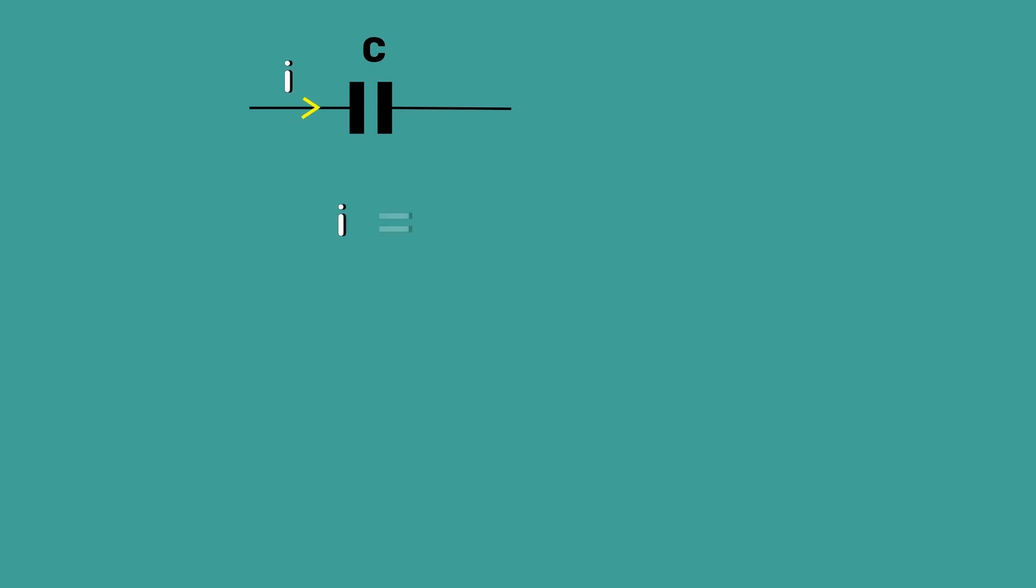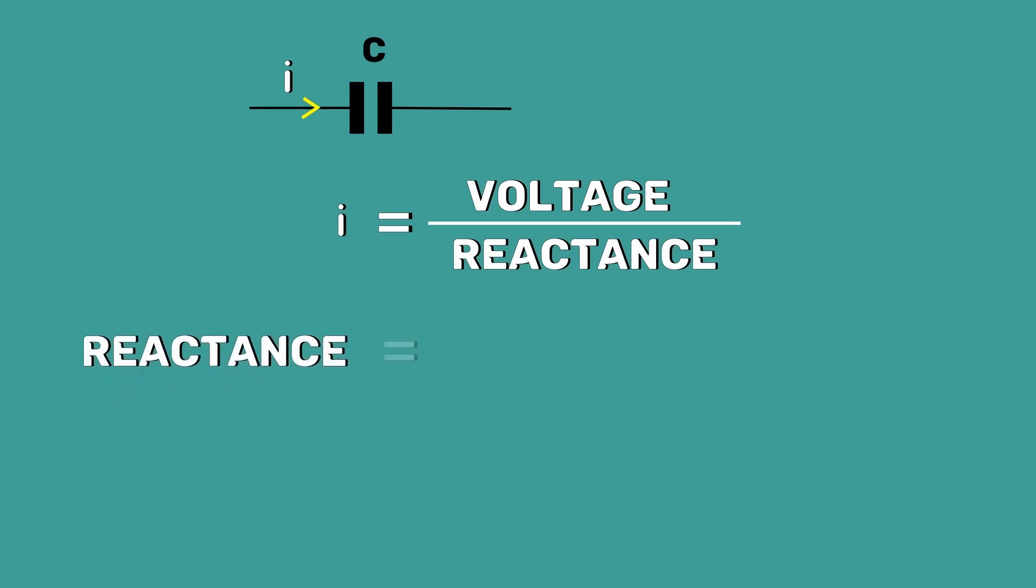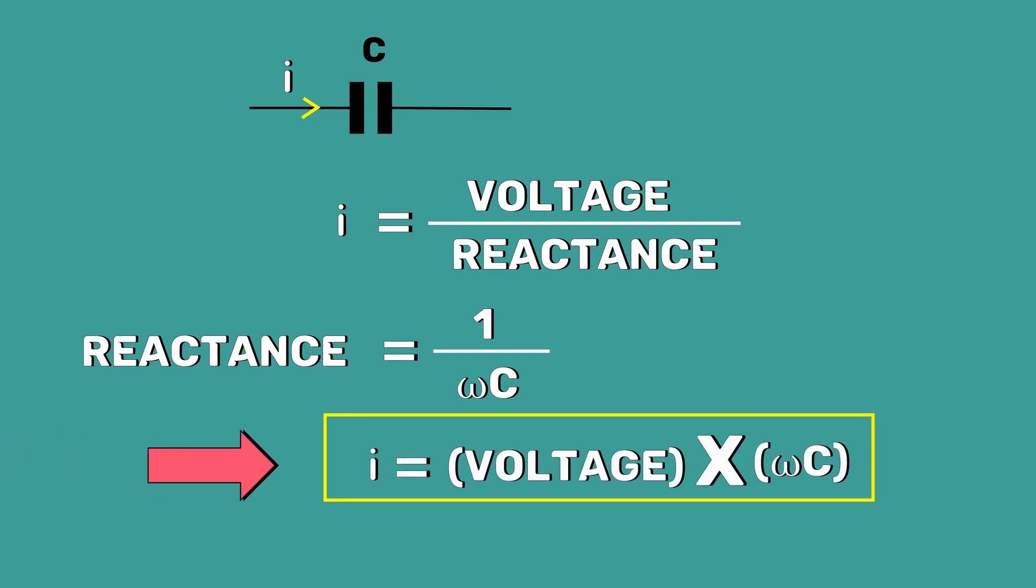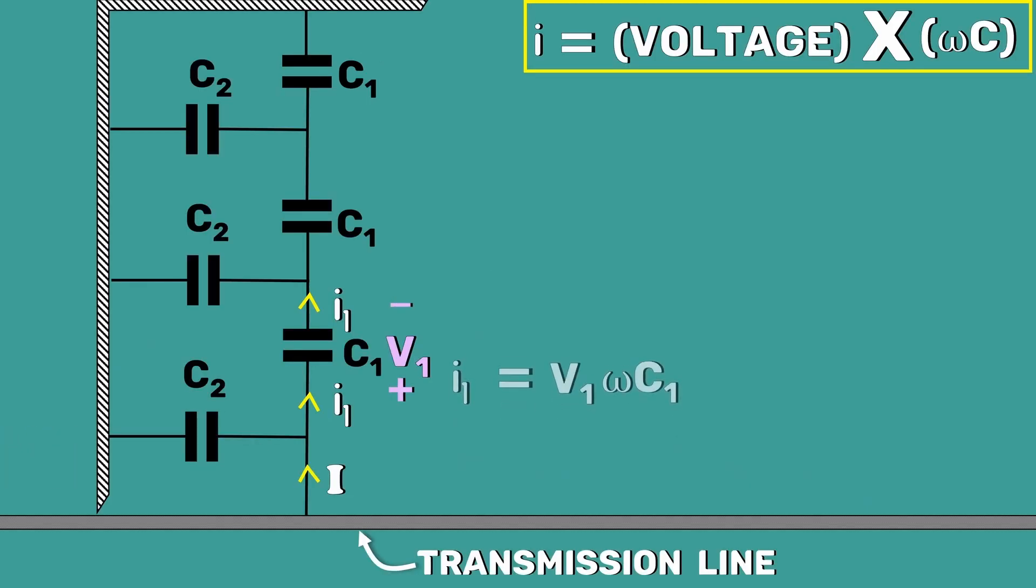We know that the current through the capacitance is equal to voltage divided by capacitive reactance. Capacitive reactance is 1 divided by omega C. Using this formula, we can find the current through all the capacitors.